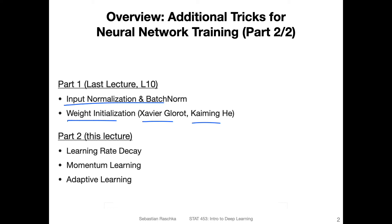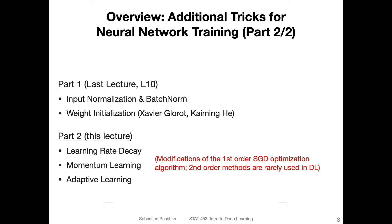In this lecture, we will discuss tricks related to the optimization algorithm. There will be sections on learning rate decay, momentum learning, and adaptive learning. These are all techniques that concern first-order methods for optimization — essentially, they are all modifications of stochastic gradient descent.